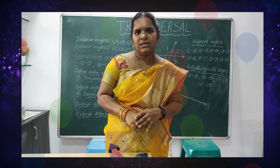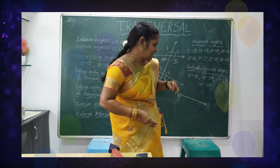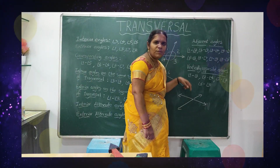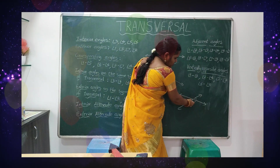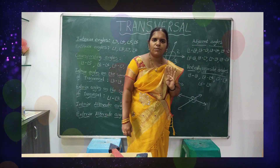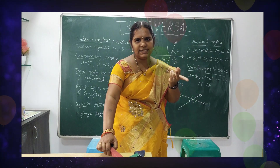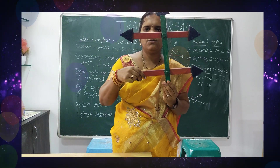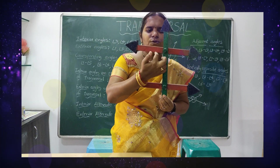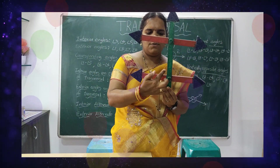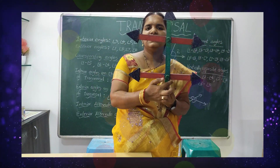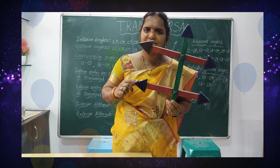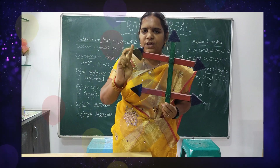Now let us discuss about transversal and its properties. If two lines intersect each other in a plane surface, four angles are going to form: one, two, three, four. Now if a transversal is intersecting two lines, how many angles are formed? One, two, three, four, five, six, seven, eight — we get eight angles total.